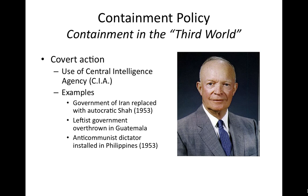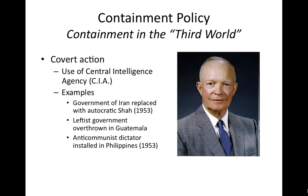Similarly in Guatemala, a leftist government was overthrown in part through CIA covert action. In the Philippines, an anti-communist dictator was installed in part by the CIA as well. All over the world, the United States was using covert action, money, and other resources to destabilize governments and ensure they were friendly toward the U.S., hostile toward communism, and maintained good relations with the West.